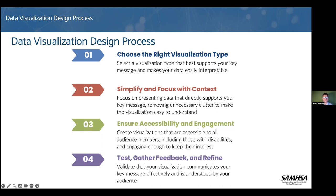The data visualization design process is divided into four steps. Number one is choosing the right visualization type. When we're talking about this, we're asking: what is the type of visualization that best supports my message and makes my data easily interpretable? We need to choose clear and straightforward visualizations such as bar charts, line graphs, or pie charts, depending on whether you want to show comparison, trends, or distributions.